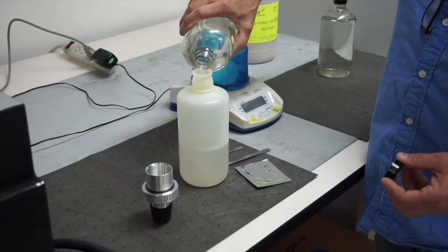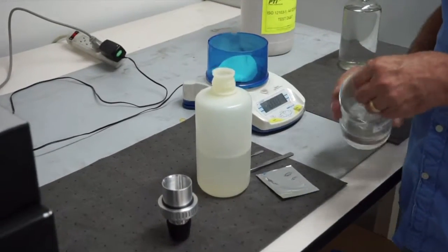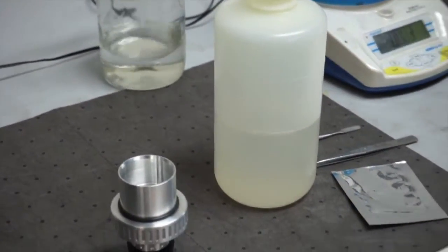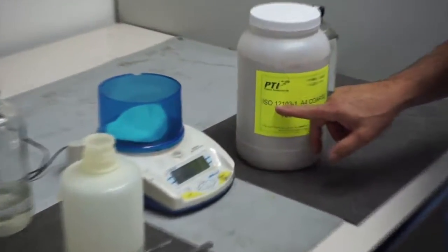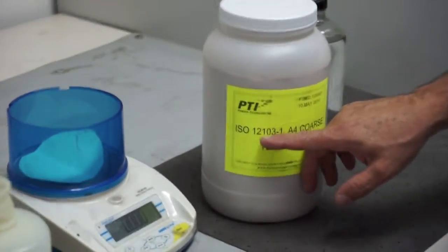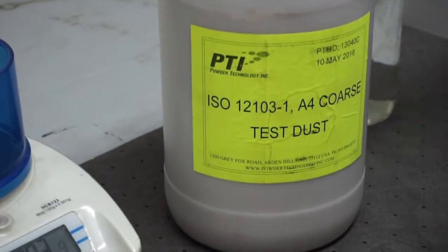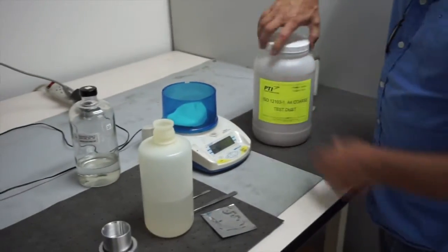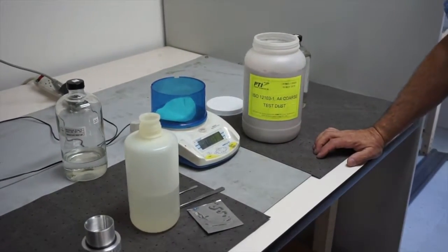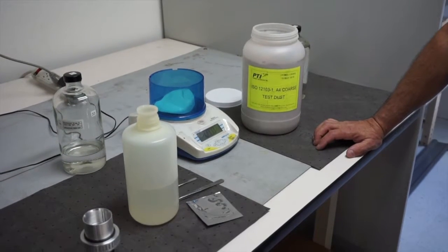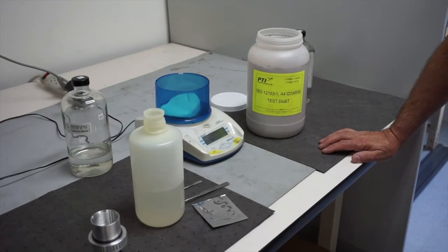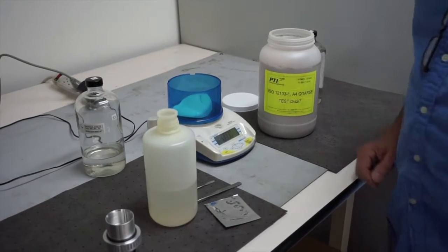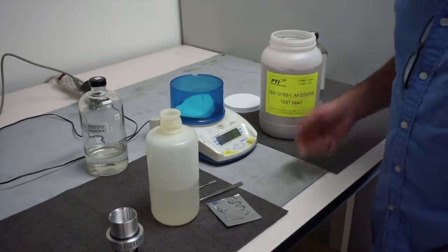So basically we just measure in 500 milliliters of fuel, and for particulate today we're using an ISO 12103-1 A4 coarse test dust, which is a standard that's pretty widely used in the industry. And the range of the measurement is 0 to 15 milligrams per liter. So since we have 500 milliliters of fuel, we can really only put in about seven milligrams of test dust, which is a very small amount.